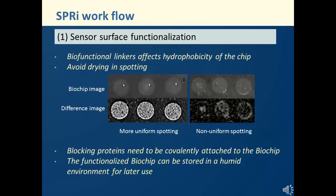Since the SPRI runs under a flow condition, the blocking proteins also need to be covalently attached to the biochip rather than physically absorbed, as in a lot of other immunoassays. Once the biochip is functionalized, it can either be used right away or stored at 4 degrees Celsius, 95% humidity for later use.